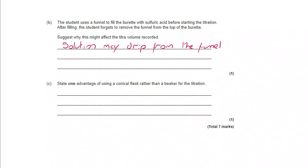Well, you're going to have solutions still in the funnel that might drip down. That means your volume in the burette will be higher than you expect, so the volume that you measure that you say you've added would be lower. That's going to have an impact on your results.